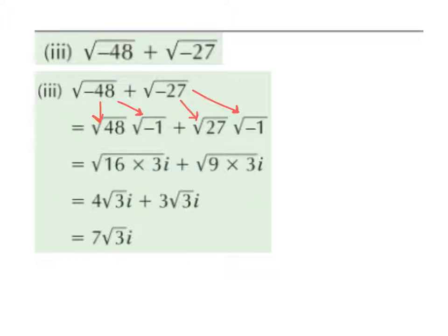Likewise, with the square root of 27, we break it down to be the square root of 9 multiplied by the square root of 3, because 9 times 3 is 27. And the square root of minus 1 will just give us i.